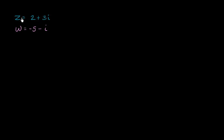We have two complex numbers here. The complex number z is equal to 2 plus 3i, and the complex number w is equal to negative 5 minus i. In this video, I want to first plot these two complex numbers on the complex plane, then think about what the distance is between these two numbers, and what complex number is exactly halfway between them — in other words, the midpoint. I encourage you to pause and think about it on your own before I work through it.